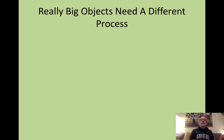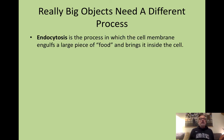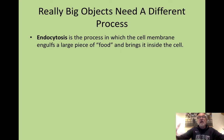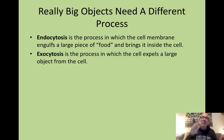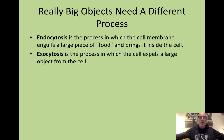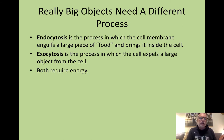Really big objects need an entirely different process to get across the membrane. Endocytosis is the process in which the cell membrane reaches out and engulfs a large substance — usually a piece of food — and brings it inside the cell. The opposite process, the expulsion of objects from the cell, is called exocytosis. Both endocytosis and exocytosis require energy, as you would expect, since moving vesicles and membrane around requires energy.